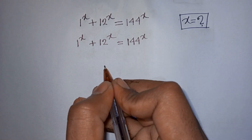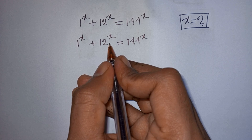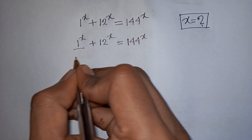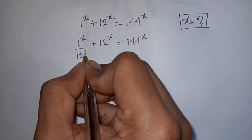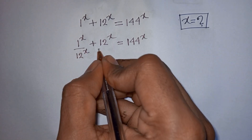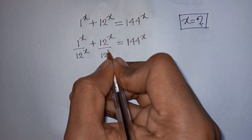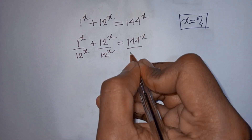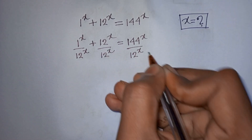We divide both sides by 12^x — dividing each term by 12^x on both sides.